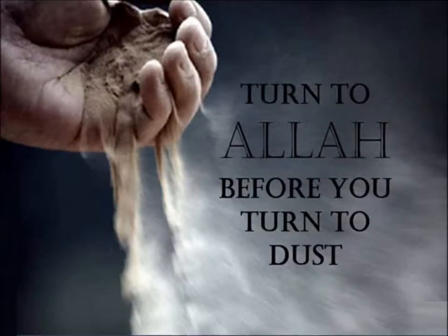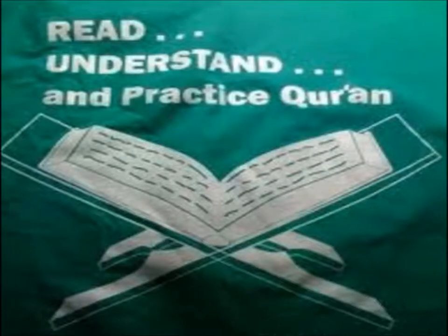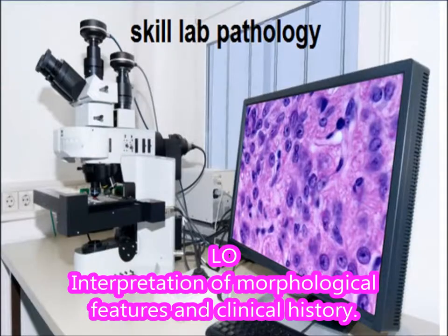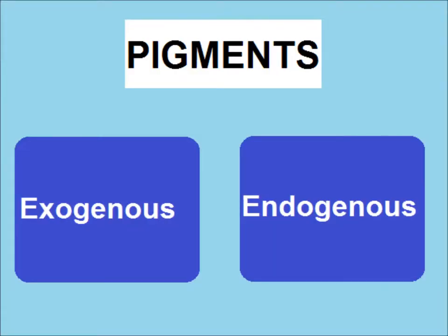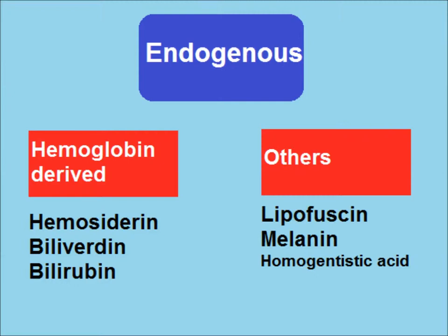Turn to Allah before you turn to dust. The Quran is the word of Allah — read it, understand it, and practice it. Today we are going to discuss skill lab pathology. The learning objective is to interpret morphological features and clinical history. Intracellular accumulations are of three types: normal cell metabolism, constituents of abnormal cell metabolism, and colored substances which are called pigments. Pigments are further subdivided into endogenous and exogenous.